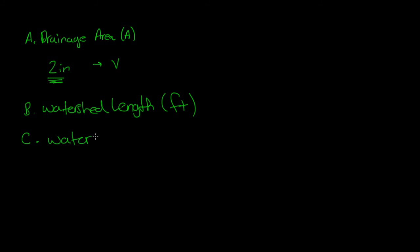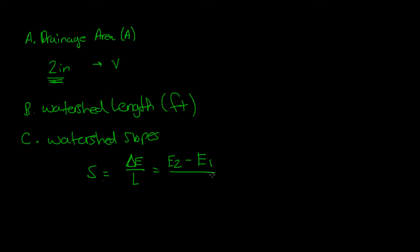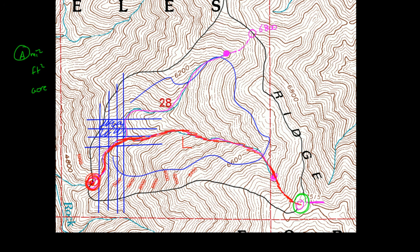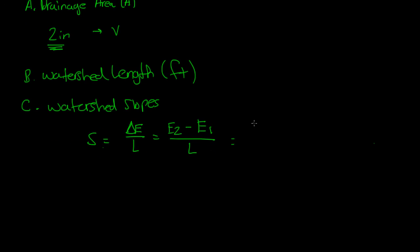Watershed slope is another characteristic. The slope is equal to the change in elevation over the length, where the length is the watershed length calculated previously. The change in elevation is the highest elevation minus the lowest elevation. In our example, the highest elevation is 7515 and the lowest is about 4800, so the slope is 7500 minus 4800 divided by the length.